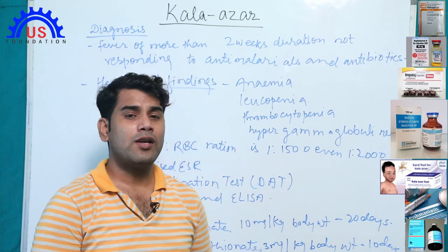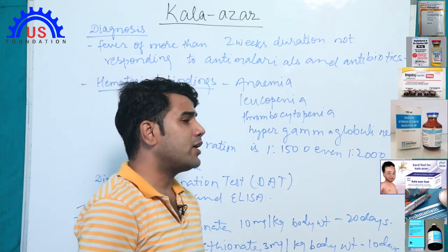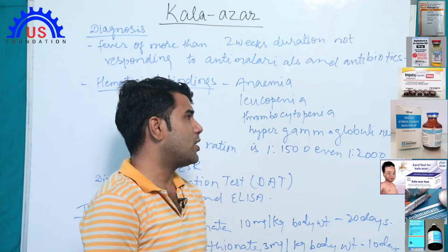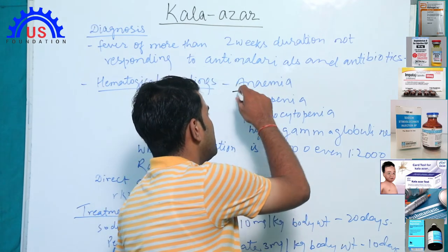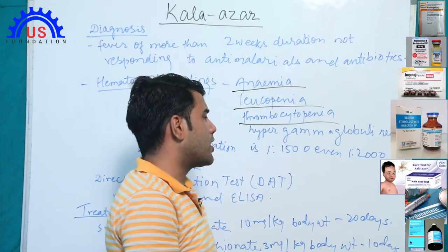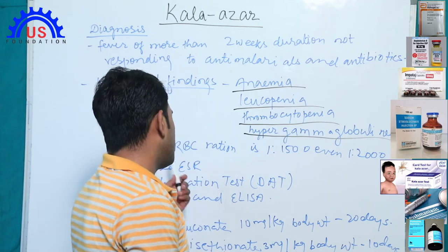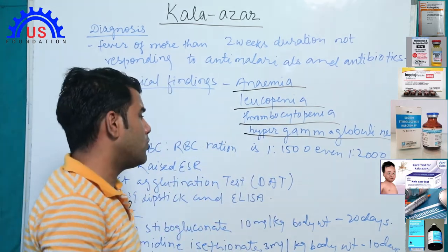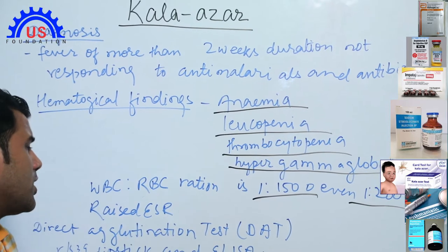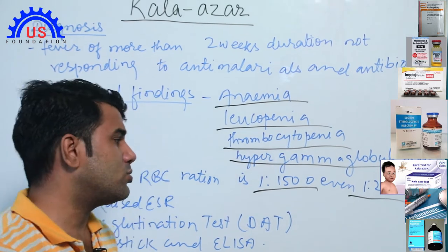The patient has already taken malaria medicine and antibiotics but has not recovered. So what do we do? We will run some findings. If we conduct a CBC (hematological test), we will see: anemia, iron deficiency, leukopenia (low WBC count), thrombocytopenia (low platelet count), hypergammaglobulinemia, and the WBC:RBC ratio will be very poor — 1:1500 or even 1:2000.